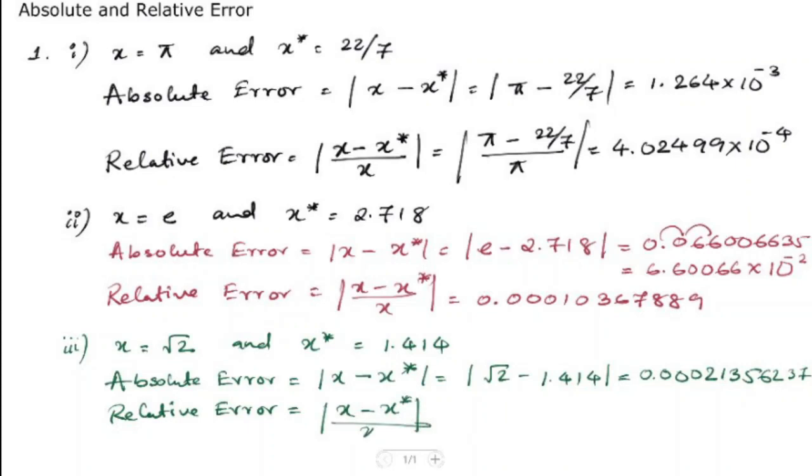And the relative error, which gives us the value - so we have here root 2 minus 1.414 divided by root 2, and that gives us the value 0.00015.